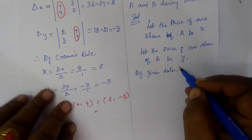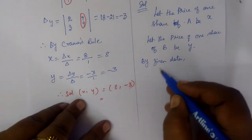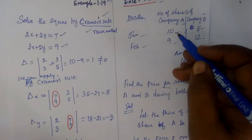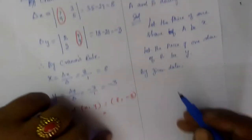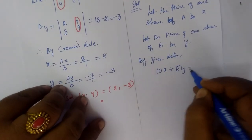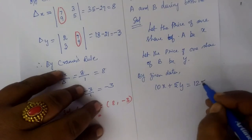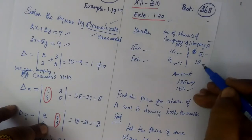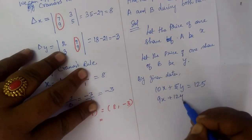By given data, if you look at the example, it will be very easy. 10X plus 5Y, that is equal to 125. Next, 9X plus 12Y is equal to 150.